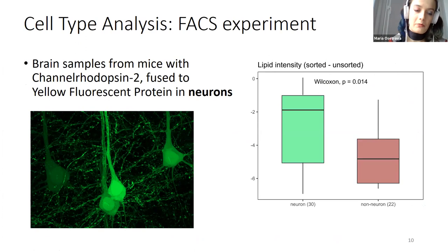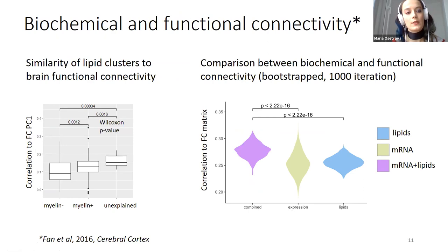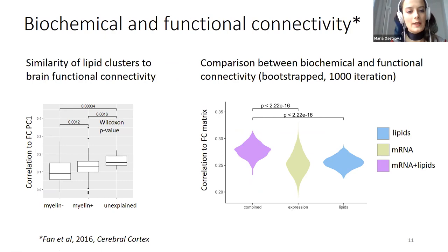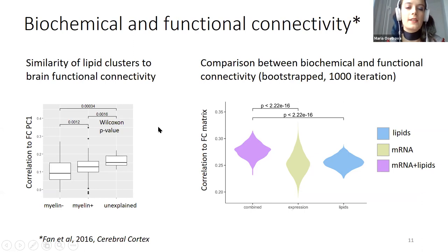We validated this result using a cell sorting experiment in mouse brain with fluorescent neurons, and we saw a significant difference for neuronal versus non-neuronal markers in the sorted versus unsorted fraction. We also wanted to see whether lipids relate to brain functioning. Using functional connectivity data from open source, we extracted the first principal component from the functional connectivity matrix and correlated it to each lipid profile. The previously unexplained cluster of lipids was significantly correlated to functional connectivity, including polyunsaturated fatty acids known to be important for brain functioning.